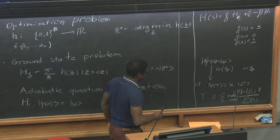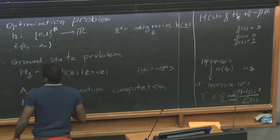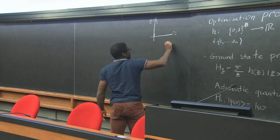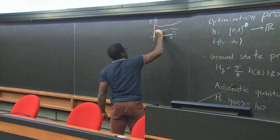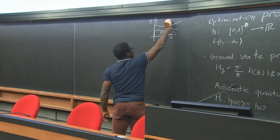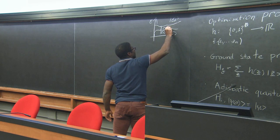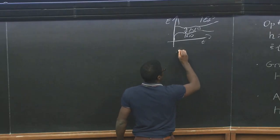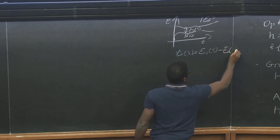The adiabatic theorem says the system remains in the instantaneous ground state of the Hamiltonian. If I plot the energies e0 and e1 as a function of time, the gap Δ(s) is the difference e1(s) − e0(s). This tells us: given these Hamiltonians, we can compute the required run time using the adiabatic theorem.